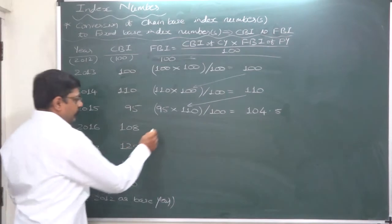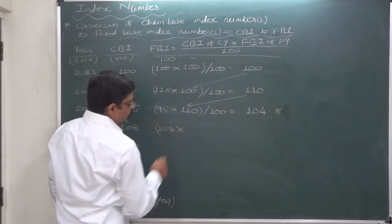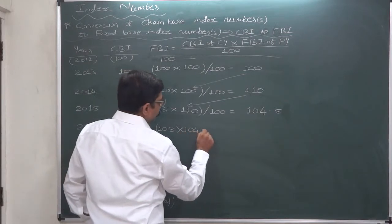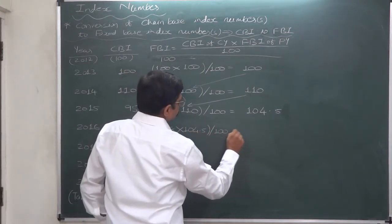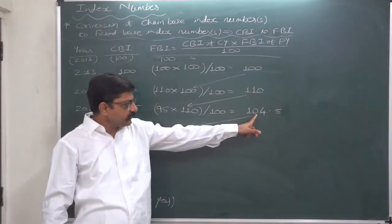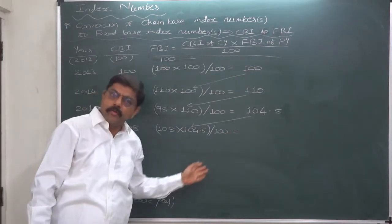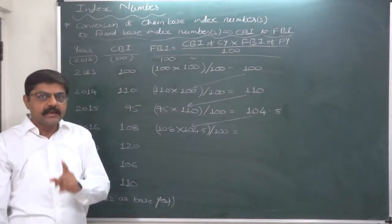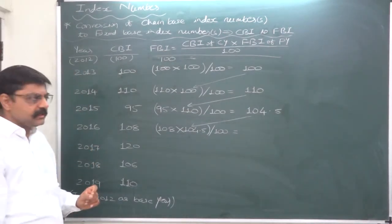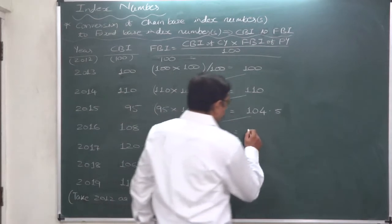For 2016: the chain base index number for the current year is 108, multiplied by the fixed base index number of the previous year that we calculated as 104.5, divided by 100. Note again: if this answer is calculated wrongly, all further answers will also be wrong. So be alert — presence of mind is needed. 108 into 104.5 divided by 100 gives 112.86.